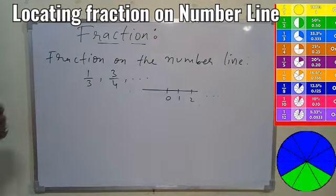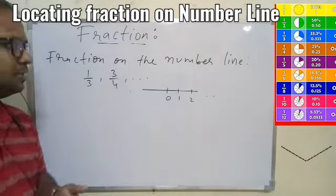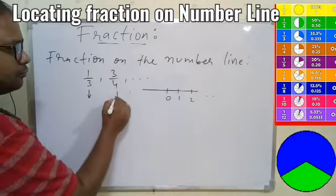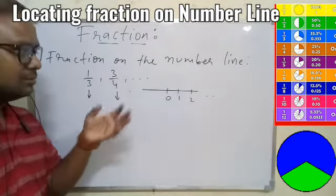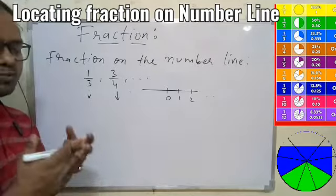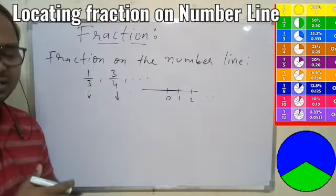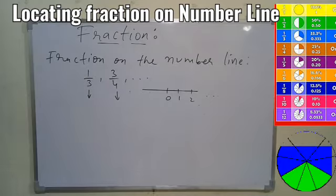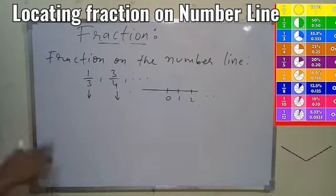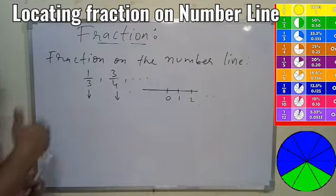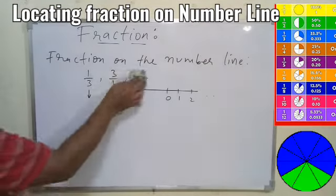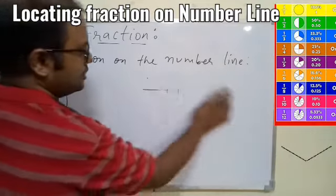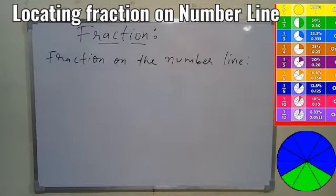So 1/3 is also a number and 3/4 is also a number. These two numbers will also be somewhere on the number line, and that is what we have to find out — how to locate the given fraction on the number line. Let's take one example to understand this properly.